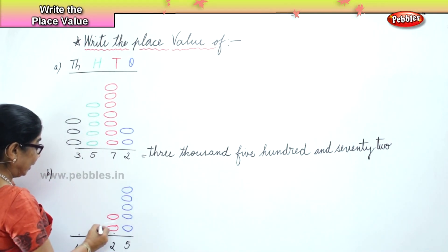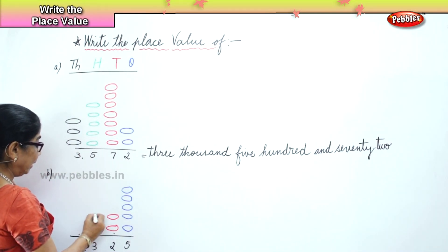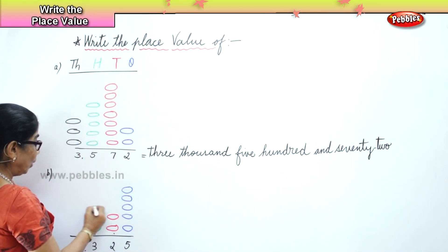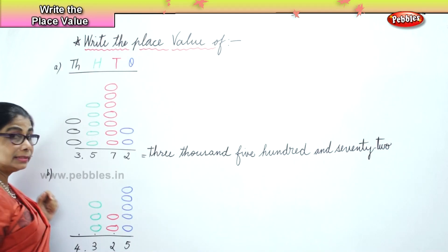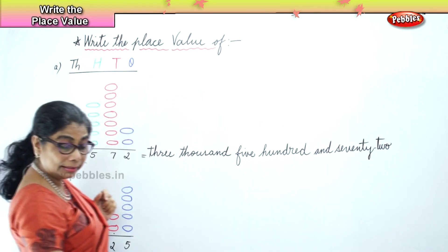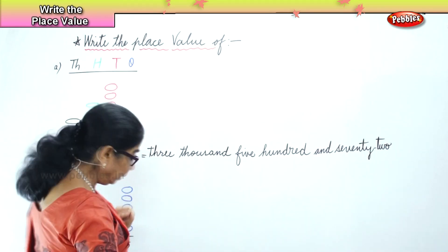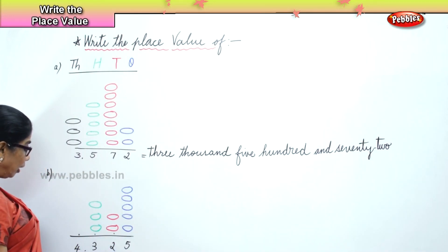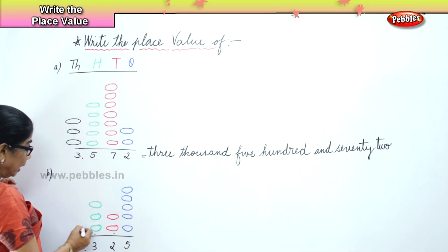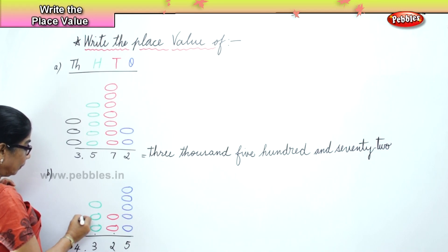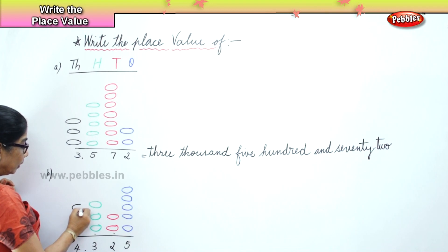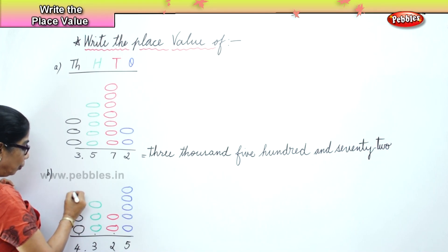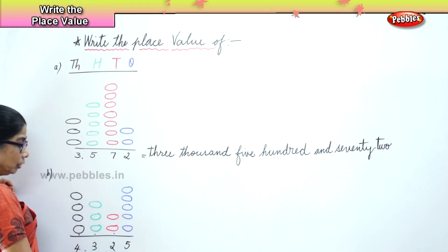Next you go to the hundreds place — you have three hundreds. One hundred, two hundred — every single bead is one hundred, hundred, hundred. Next you have four thousands — one bead is one thousand: one, two, three, and four. So you have four thousands.